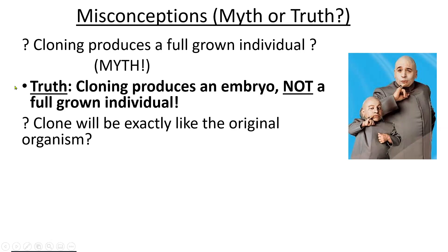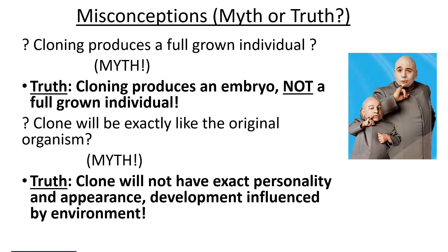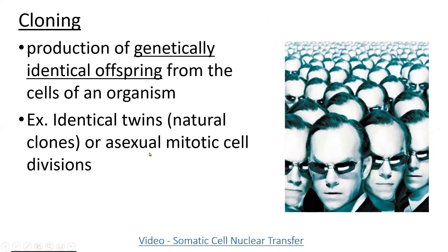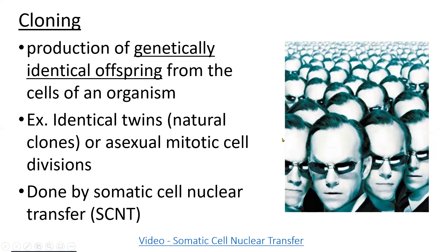We don't clone humans because it's considered unethical. What we do clone is genes, tissue, organs, and we have cloned other mammals — Dolly the sheep was the most famous. Cloning is just the production of a genetically identical offspring, and it happens in nature all the time with identical twinning. The technology we use to clone in a lab is called somatic cell nuclear transfer, or SCNT. We take a somatic — that is, body — cell of the organism we're trying to clone and remove its nucleus.